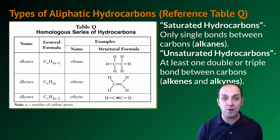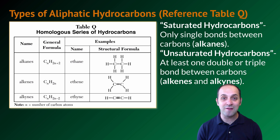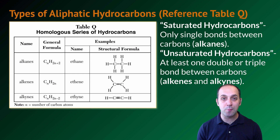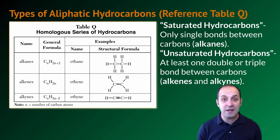Reference table Q shows three examples: ethane, ethene, and ethyne — the homologous series of hydrocarbons. The alkanes are one homologous series, alkenes another, and alkynes a third. Each series has a characteristic general formula. For alkanes it's CnH(2n+2), so an alkane with three carbons has eight hydrogens. For alkenes it's CnH(2n), and for alkynes it's CnH(2n-2). We lose two additional hydrogens for each series because of that double bond, or triple bond in the case of alkynes.